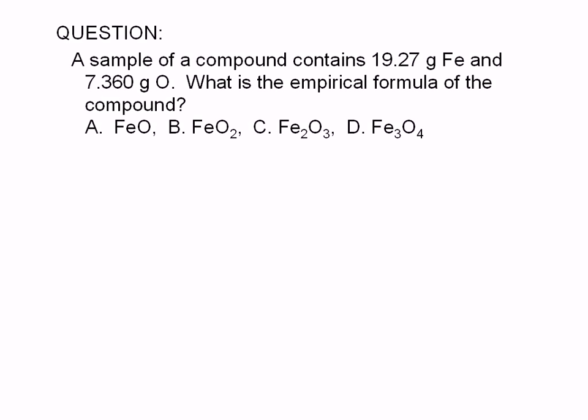A sample of a compound contains 19.27 grams of iron and 7.360 grams of oxygen. What is the empirical formula of the compound? A, FeO, B, FeO2, C, Fe2O3, or D, Fe3O4.